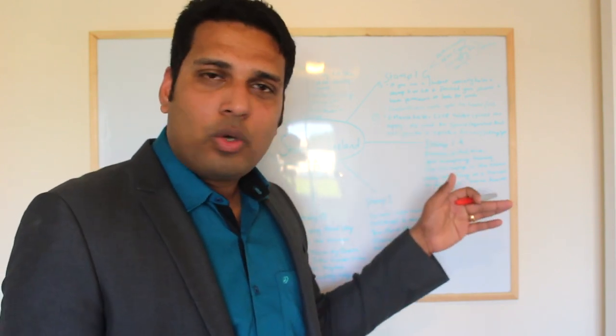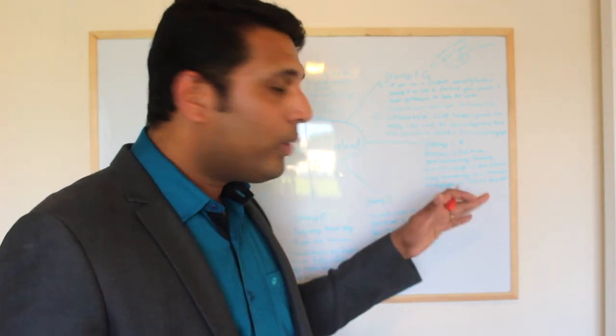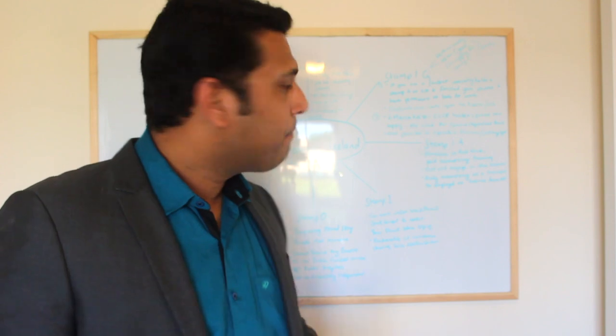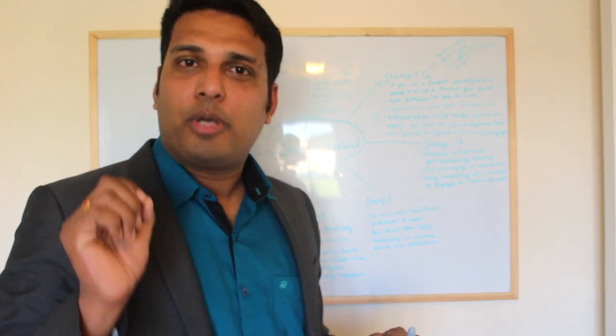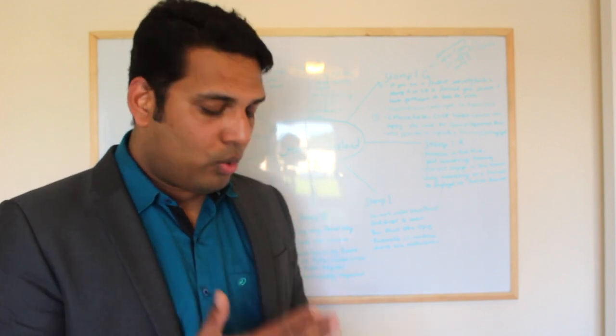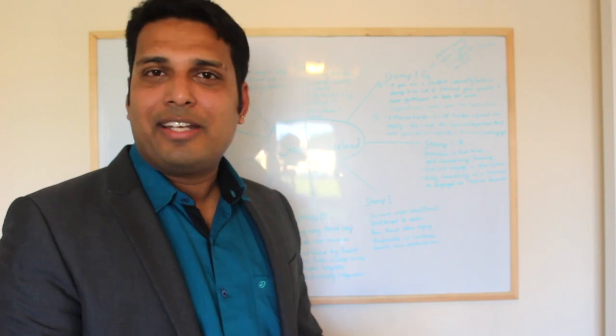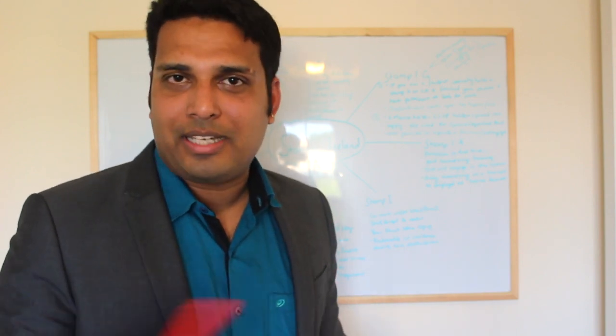And again on 6th of March critical skills work permit holder spouses can apply for stamp 1G. No need for spousal dependent work permit going forward but you're not permitted to operate any business or you cannot be self-employed. One thing you have to understand, if you hold stamp 1G you have to renew it annually and after five years you will automatically be issued with stamp 4.